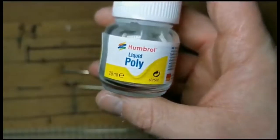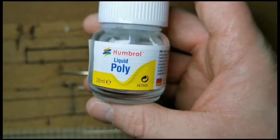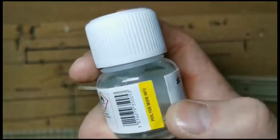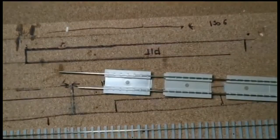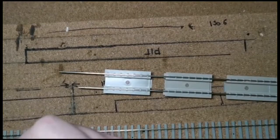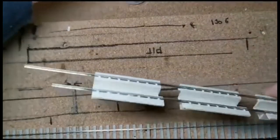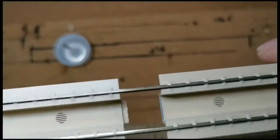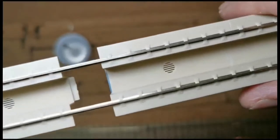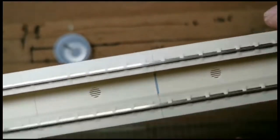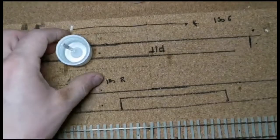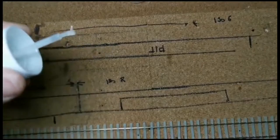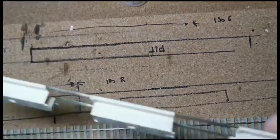Right, so the glue I'll be using is this Humbrol liquid poly. It should work on most plastics, should be suitable for this pit. As you can see I've already slotted my sections of pit onto the track. I'll just apply glue to the edges and simply slot them together and leave them to glue in place. A bit of glue on the brush, not too much.